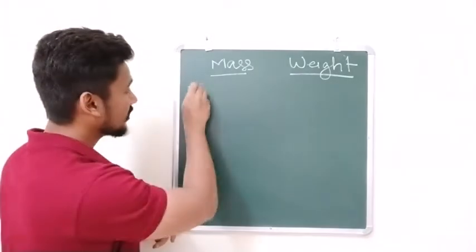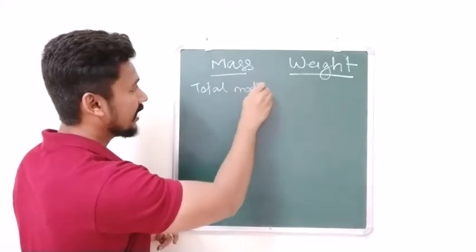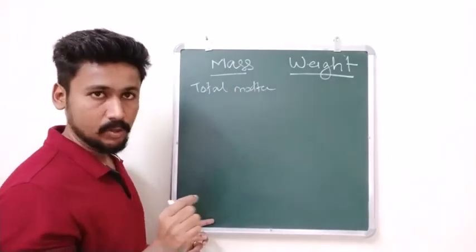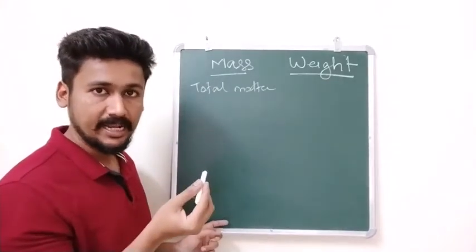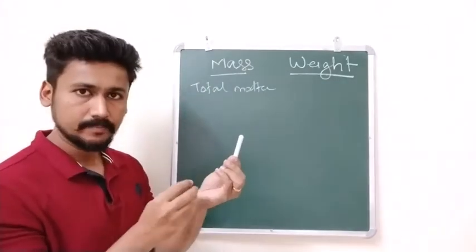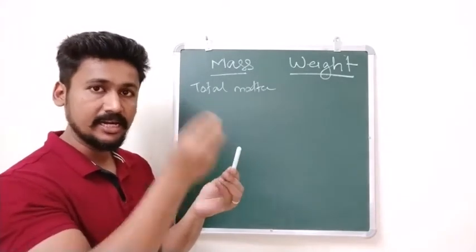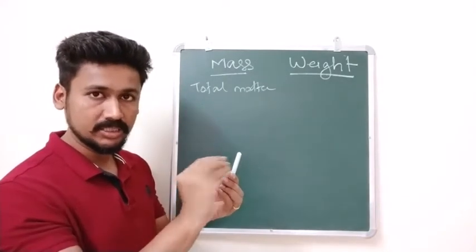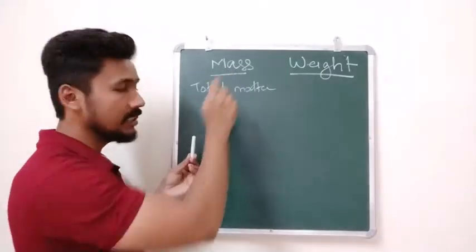So now let us define what is mass. Mass we define as the total matter that is contained in an object. So if I look at this chalk whatever is the total matter, that is all the atoms which are containing the electrons, protons, neutrons, all that will be the total matter and that will constitute the mass.